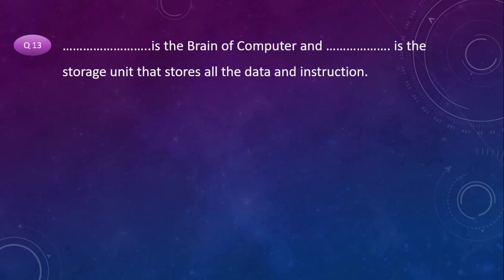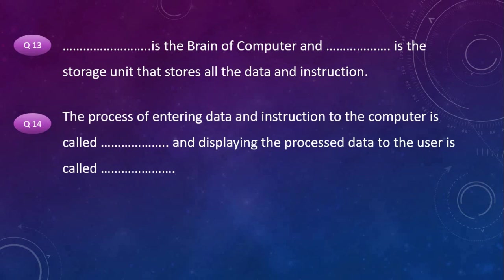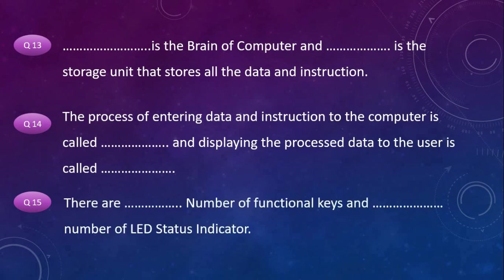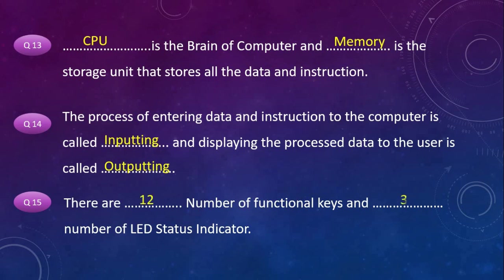CPU is the brain of the computer and memory is the storage unit that stores all the data and instructions. The process of entering data and instructions to the computer is called inputting, and displaying the processed data to the user is called outputting. There are 12 function keys and 3 LED status indicators.